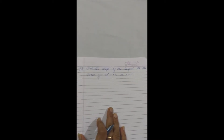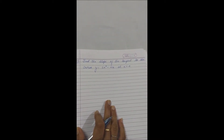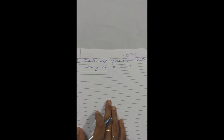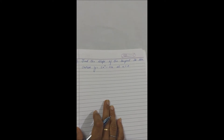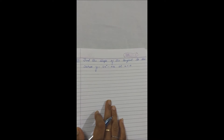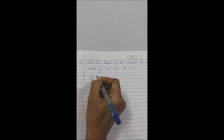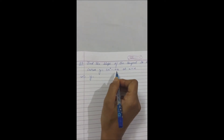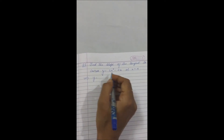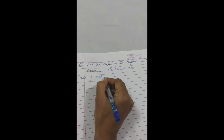Our first question is: find the slope of the tangent to the curve y = 3x⁴ minus 4x at x = 4. In that case, you have to find the slope of the tangent. As I told you, in this chapter we will find slope using dy by dx. Here our curve is given, and there is a particular graph which we do not need to draw.